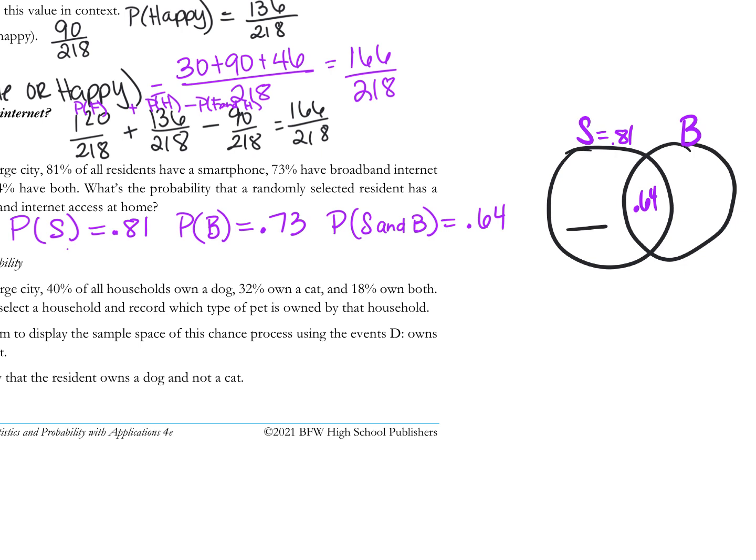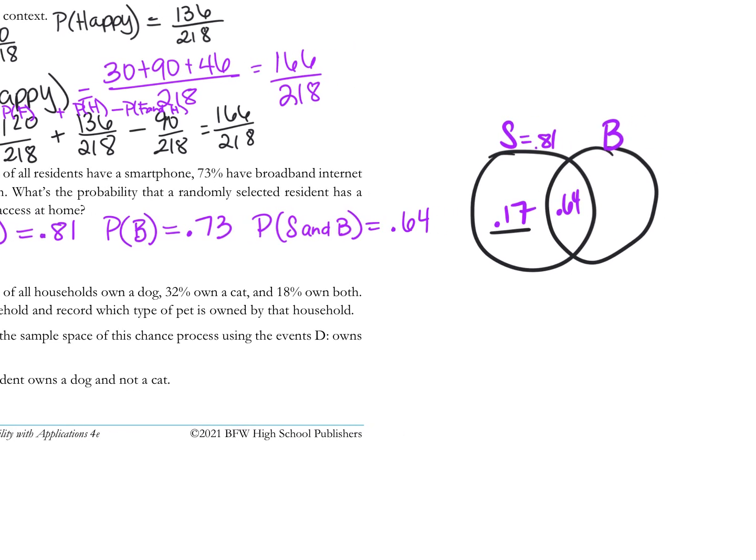If 64% have both and 81% have a smartphone, we have to subtract the 64% to find those that only have a smartphone. 81 minus 64 is what? 0.17. And those that have broadband, that circle totals to 0.73, which means what percent have broadband but not a smartphone? 0.09, subtract 0.73 minus 0.64 is 0.09. 0.81 minus 0.64 is 0.17.